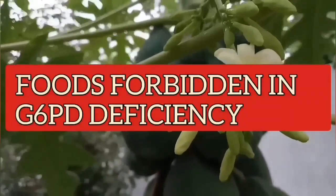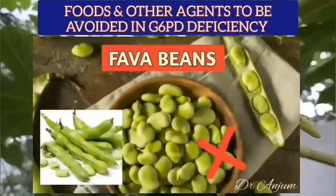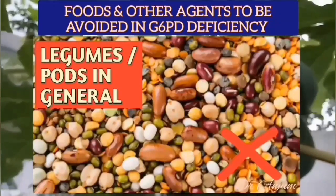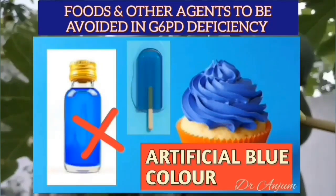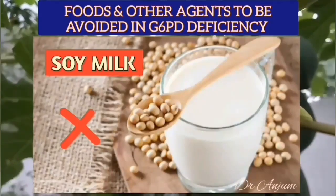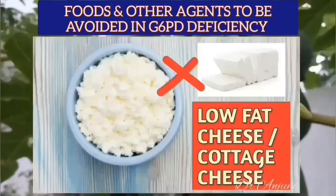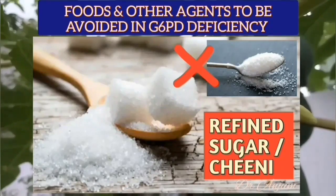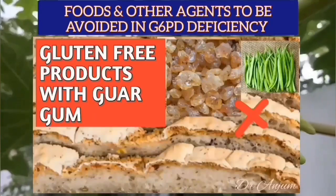Now I will give you the names and pictures of foods which should be avoided in G6PD deficiency. These include fava beans, legumes and pods in general, menthol, artificial colors especially blue color, corn syrup, soya milk, soya chunks and products, low-fat cheese and cottage cheese, refined sugar, processed fruit jams, and gluten-free products with guar gum.